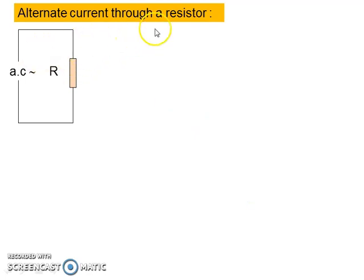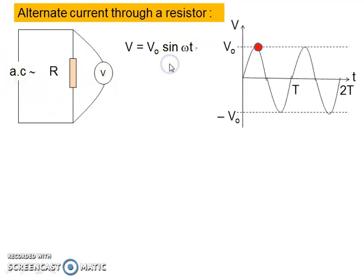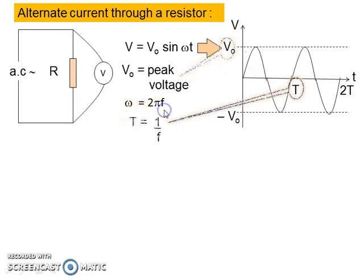First, alternate current through a resistor. Observe this circuit consists of only resistor. The voltmeter across the resistor measures V equals to V0 sine omega T because this is alternate current. The graph is a sine graph for V against T. V0 is the peak voltage. Angular frequency omega equals to 2 pi F, where F is frequency. And period T equals to 1 per F.